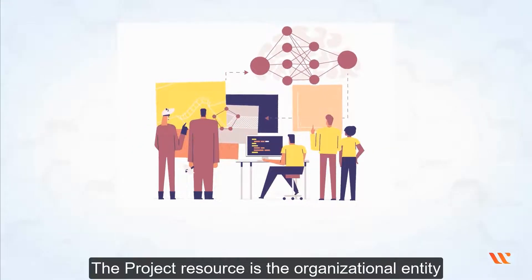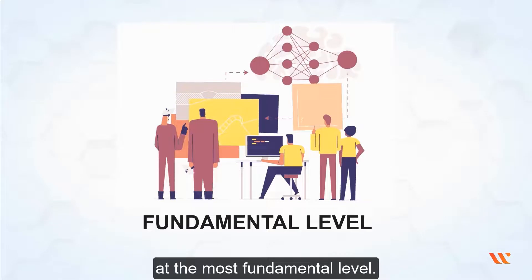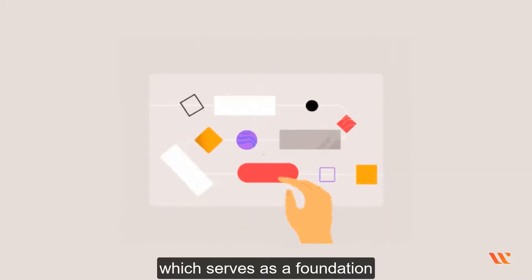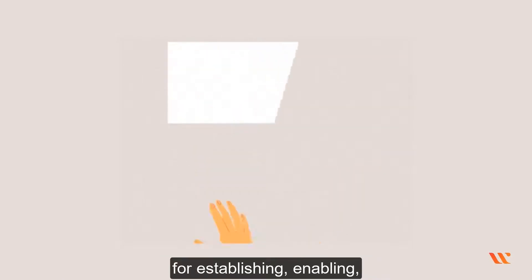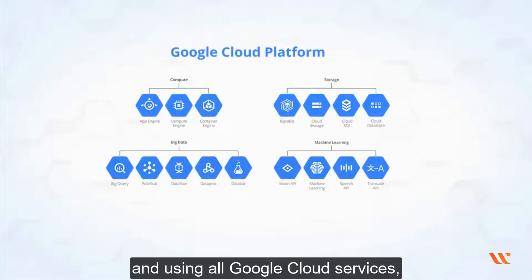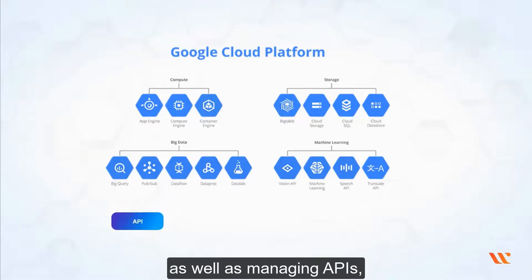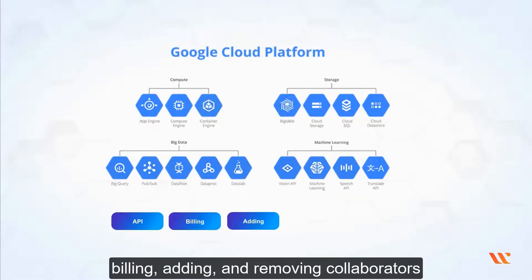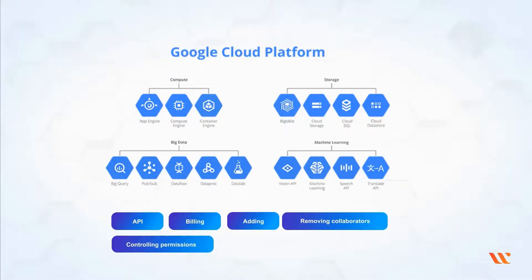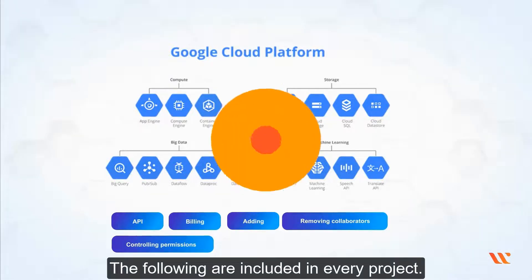The project resource is the organizational entity at the most fundamental level. Multiple projects can be found in organizations and folders. To utilize Google Cloud, you must first create a project, which serves as the foundation for establishing, enabling, and using all Google Cloud services, as well as managing APIs, billing, adding and removing collaborators, and controlling permissions.